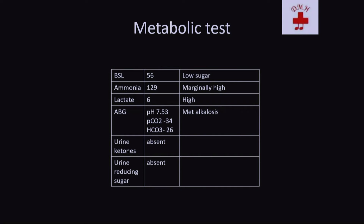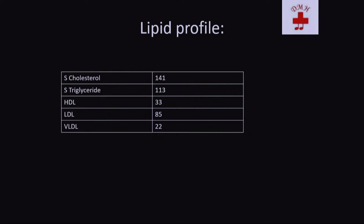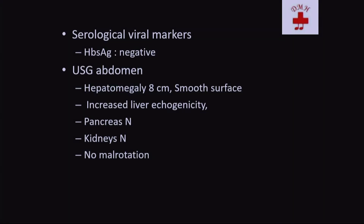This child was actually sent because TTG was positive and they wanted to rule out celiac. But we did other workup — the metabolic workup clearly showed metabolic alkalosis, rise in ammonia, borderline BSL, urine ketones and reducing substances absent. We also sent lipid profile, which was normal. Serological viral markers including HBsAg were negative. USG abdomen showed 8 cm enlarged liver, smooth surface with increased echogenicity, normal pancreas, normal kidneys, no malrotation.